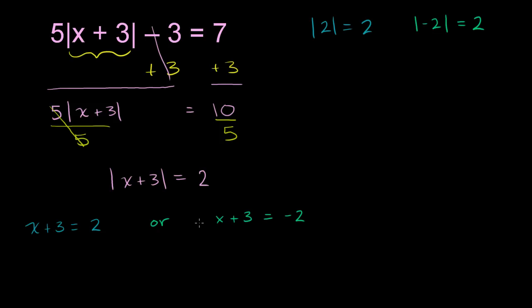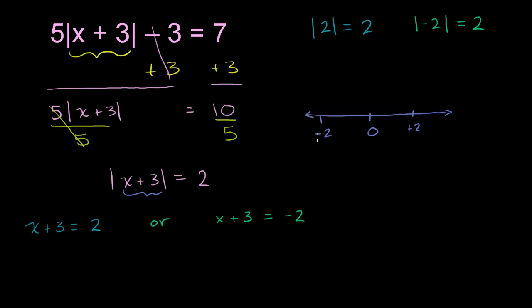Another way to think about it: absolute value means distance from 0. If we draw a number line with 0, this is saying that whatever quantity is inside the absolute value sign, its distance from 0 is 2. So what numbers are 2 away from 0? You have positive 2 and also negative 2. Either way, taking the absolute value of positive 2 or negative 2 gives you 2.